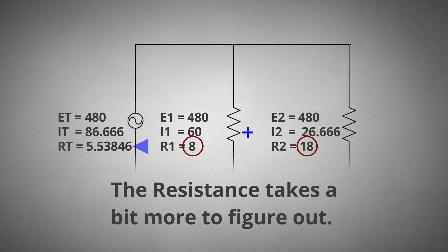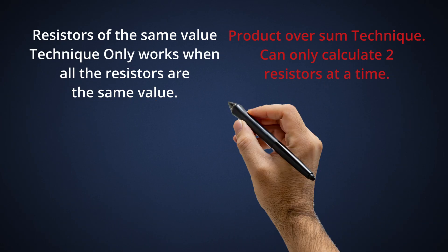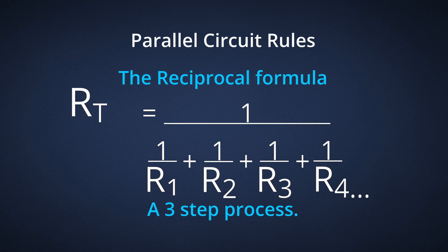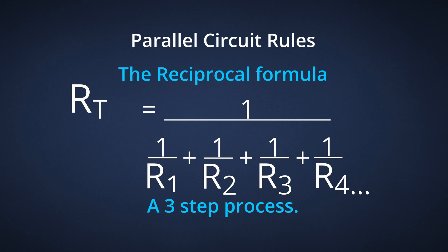There is a special formula for finding total resistance: the reciprocal formula. We have come up with a simple three-step process for calculating the total resistance in a parallel circuit. The resistors-of-the-same-value technique only works when all the resistors of the same value are present. The product-over-the-sum technique can only calculate two resistors at a time. Only one technique works in every situation — the reciprocal formula, broken down into three steps. Whether you have one or twenty resistors, this three-step process works perfectly every time.